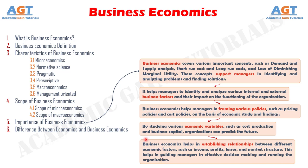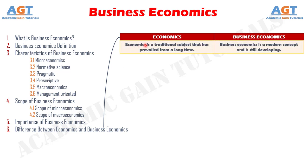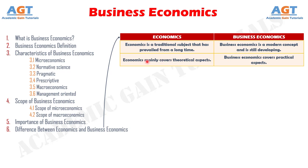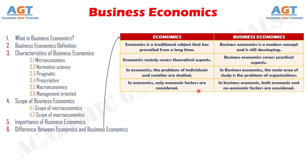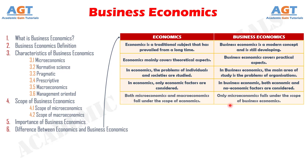The differences between economics and business economics: Difference 1 - economics is a traditional subject that has prevailed for a long time, whereas business economics is a modern concept and is still developing. Difference 2 - economics mainly covers theoretical aspects, whereas business economics covers practical aspects. Difference 3 - in economics, the problems of individuals and societies are studied, whereas in business economics, the main area of study is the problems of organizations. Difference 4 - in economics, only economic factors are considered, whereas in business economics, both economic and non-economic factors are considered. Difference 5 - both microeconomics and macroeconomics fall under the scope of economics, whereas only microeconomics falls under the scope of business economics. Difference 6 - economics has a wider scope and covers the economic issues of nations, whereas business economics is limited to the economic problems of organizations.